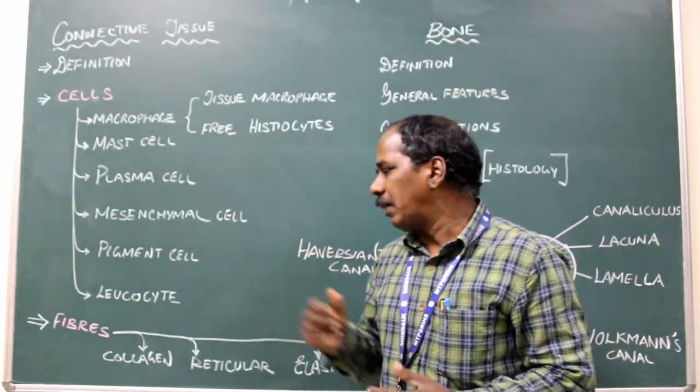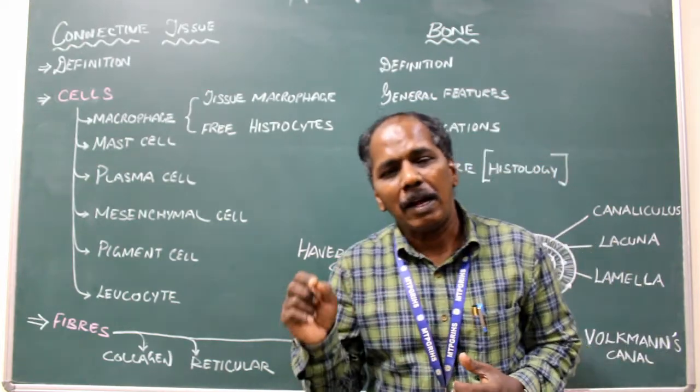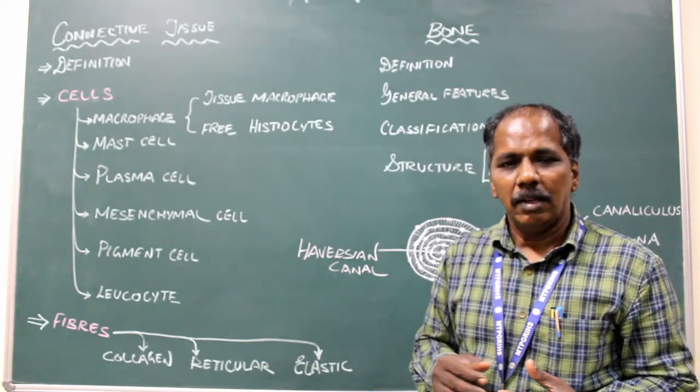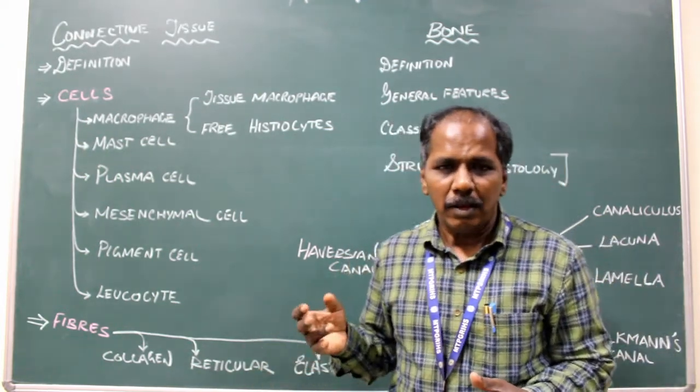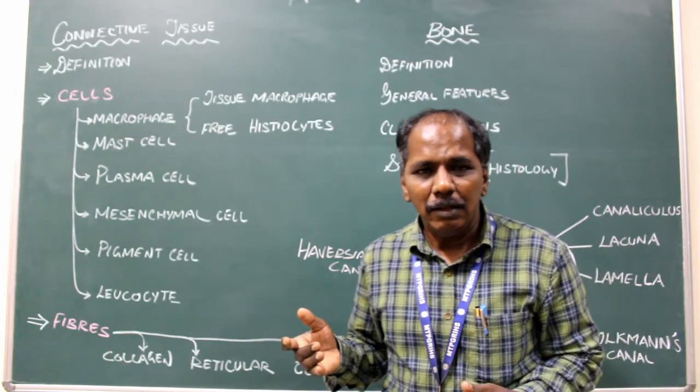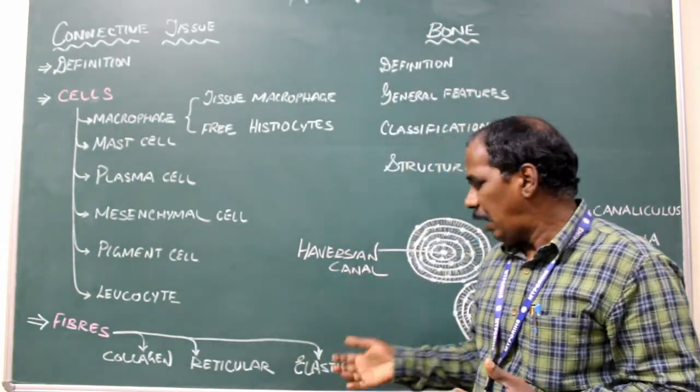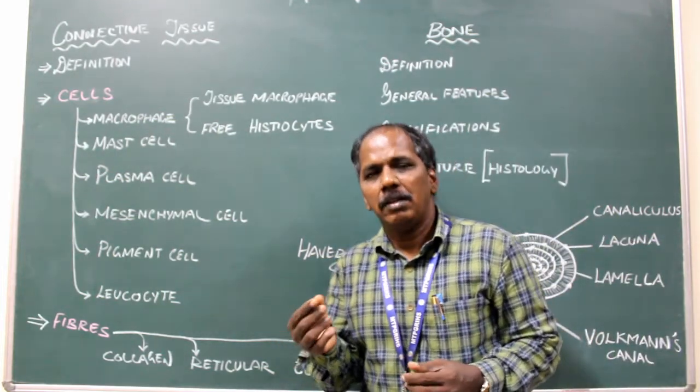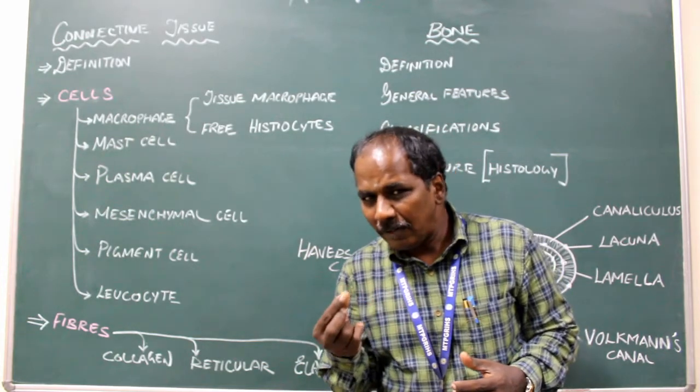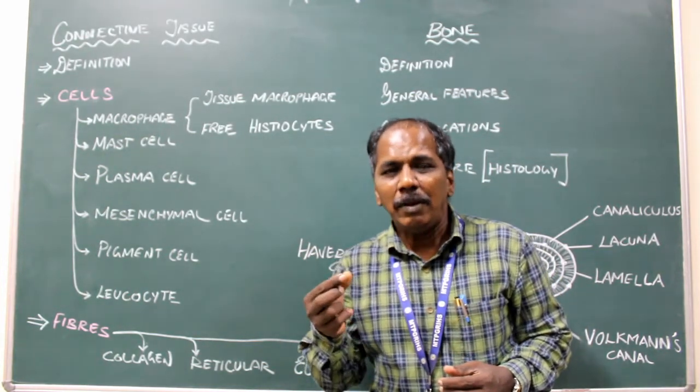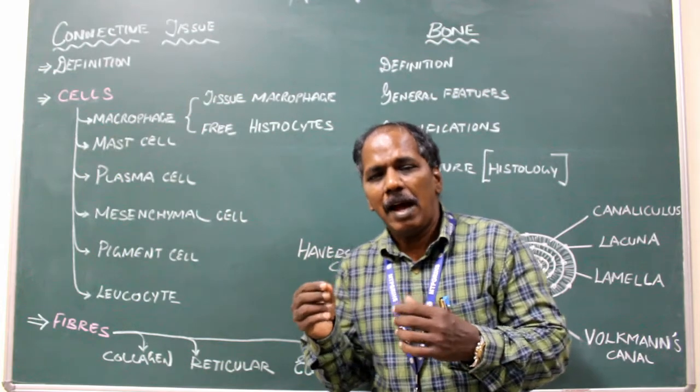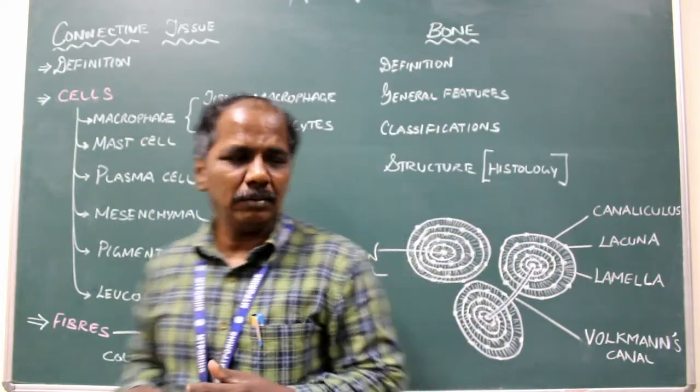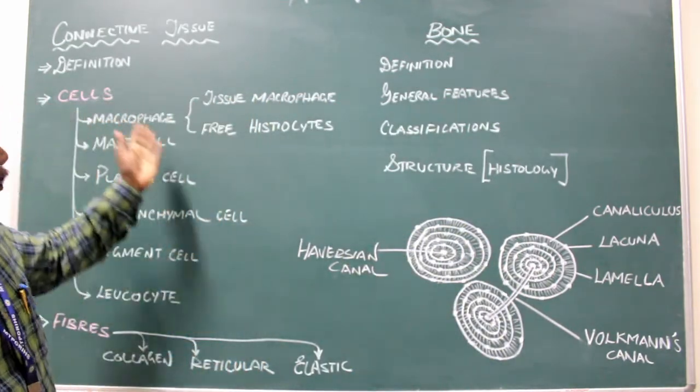Type 2 fibers are seen in articular cartilage. Reticular fibers are present in spleen, lymph node, kidney, bone marrow. Elastic fibers, these fibers are present in large blood vessels, for example aorta, superior inferior vena cava, pulmonary trunk. So it is present in large arteries.